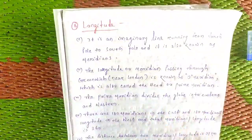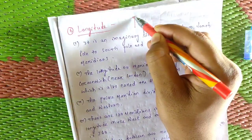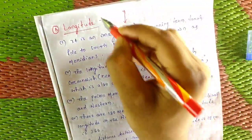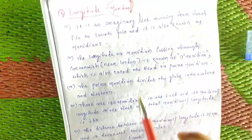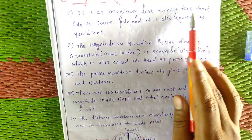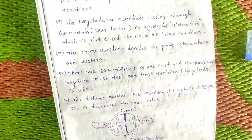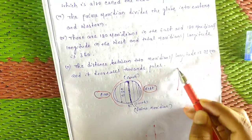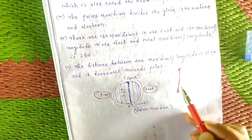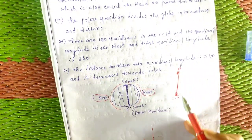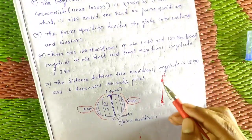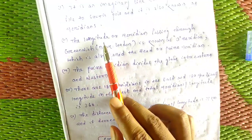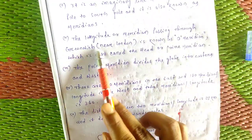Longitude is an imaginary line running from the north pole to the south pole — that is, north to south. Longitude is also known as a meridian. The longitude or meridian passing through Greenwich near London is the Prime Meridian.